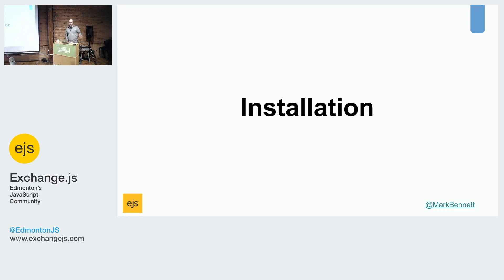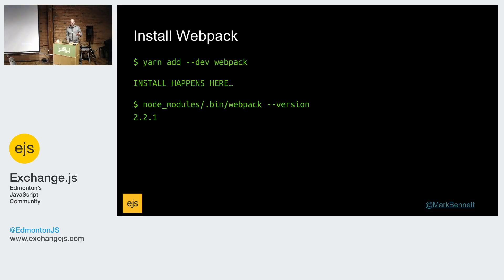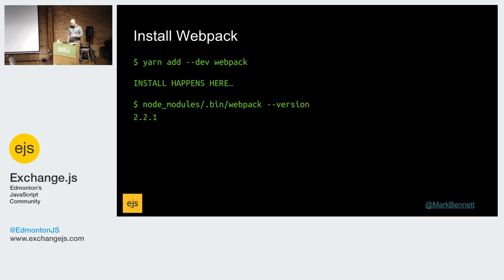Getting started with Webpack is super easy — you can install it directly from NPM. I'm going to quickly show how you would install it with Yarn, but you can also use NPM. Rather than installing it globally, it's good practice to install it locally just to your project itself so you can be sure you're using a specific version. When that happens, it installs into a folder called node_modules in a bin folder. To check that it's installed, you can just run the version flag to make sure it's the version you expect.